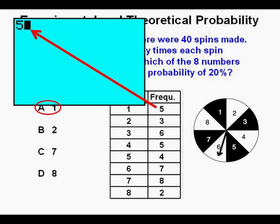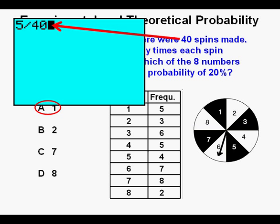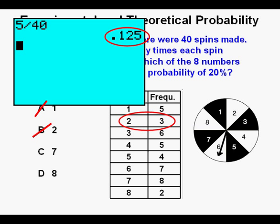We can try each of the answers to see which one gives us 20%. For answer A, which is number 1, we place the number of times 1 was spun — that was 5 — and divide it by the total number of attempts, 40. We get 0.125, which is 12.5%. It's not 20%, so we cross off answer A. Since we're looking for 20%, we need more than five landings, so number 2 with only three times landing will be even less than 12.5% — we cross off answer B as well.